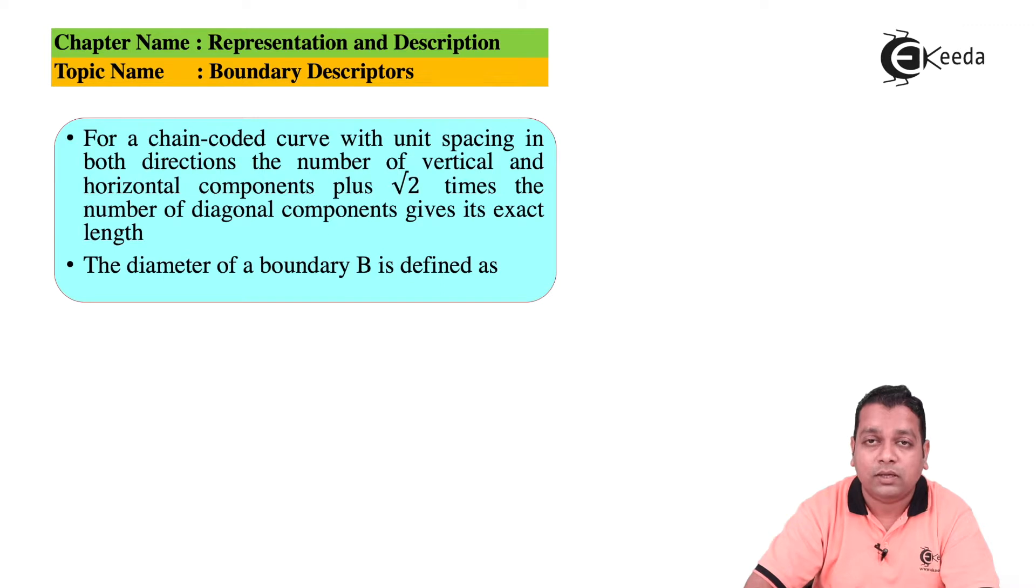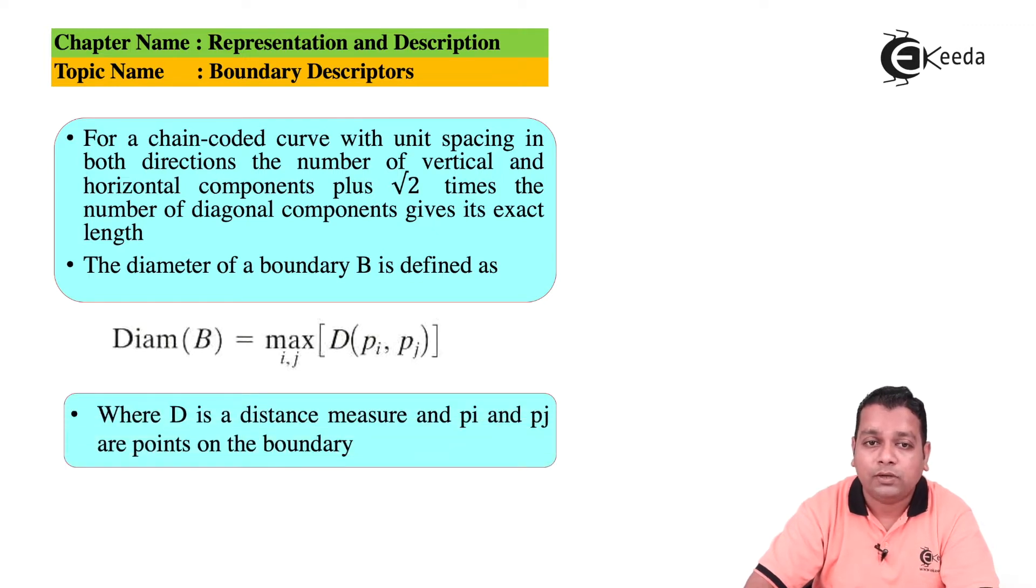The diameter of the boundary represented capital B can be defined by the formulation here. The diameter of the boundary capital B represented within the parenthesis can be computed by having the max operation with the index factors I and J over D of P suffix I comma P suffix J in general. Here capital D is a distance measure and P suffix I and P suffix J are the points onto the boundary.